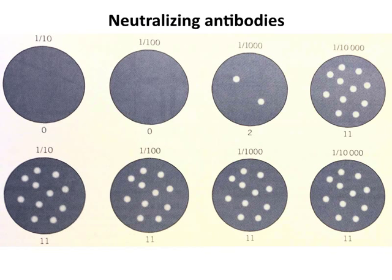At a 1-to-10,000 dilution of serum, there's no difference in neutralization compared with serum from an unimmunized animal. At 1-to-1,000, you see inhibition of plaque formation. At 1-to-100, all the plaques are gone. So this animal is making antibodies that block infection—this is the definition of neutralizing antibodies: they block virus infection. A plaque assay is one way to measure them. It's really important to recognize that not all antibodies made in response to an infection are neutralizing—many bind the wrong epitopes and do not interfere with infection.